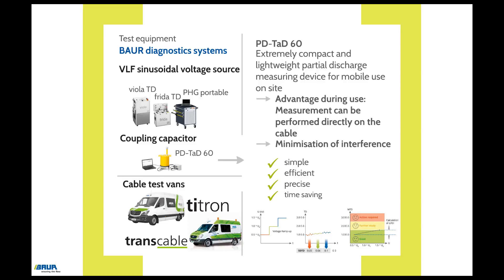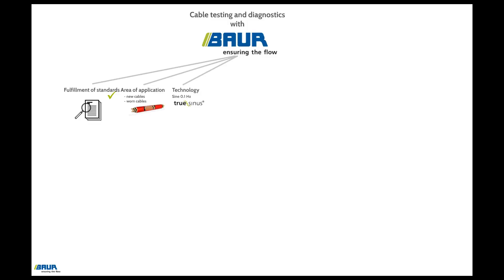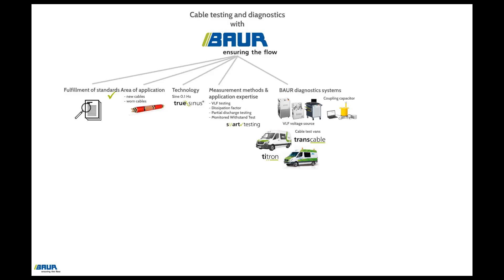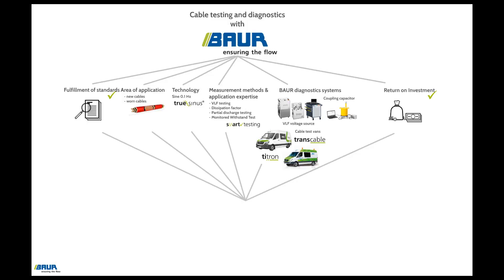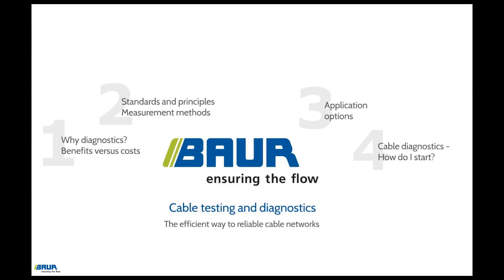This means that the cable only has to be loaded with the test voltage once. To sum up, cable testing and diagnostics with Bauer measuring devices can be used for the testing of both new and worn cable routes, whilst adhering to all relevant standards. 0.1 Hz sinusoidal voltage offers optimal preconditions for the use of VLF, dissipation factor measurement, and partial discharge testing, and for the combined variant, the monitored withstand test. The measuring equipment ranges from portable variants to integration in the trans-cable or titran cable test vans. The systems from Bauer permit precise and efficient cable testing and diagnostics for fault-free and reliable cable networks. The fourth part of the video series will focus on the implementation of cable diagnostics during operation and the presentation of practical examples.